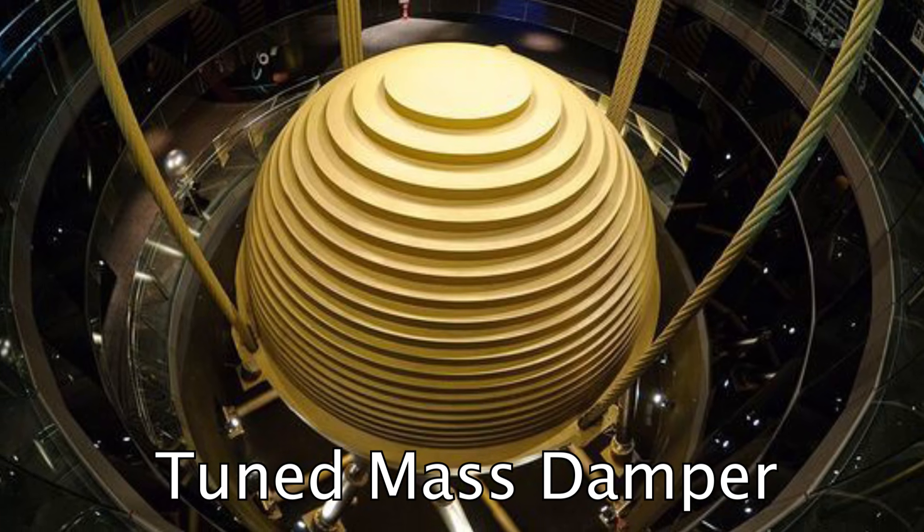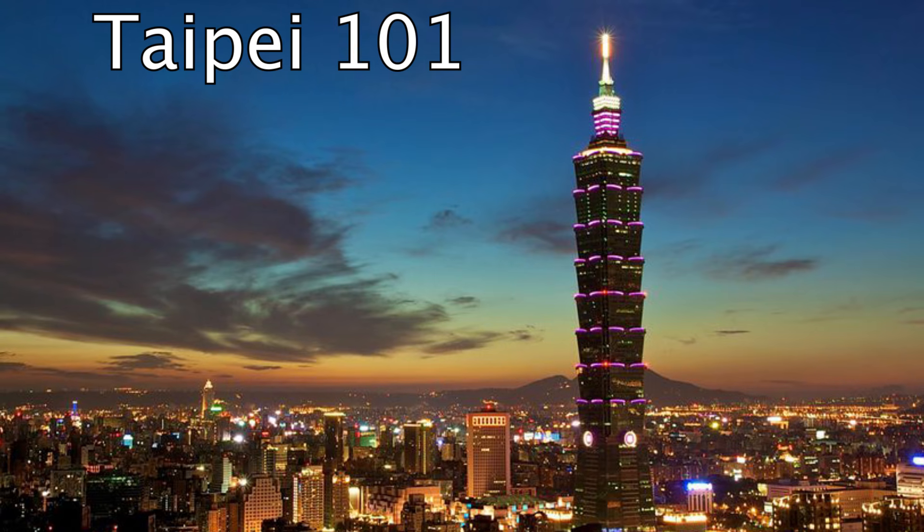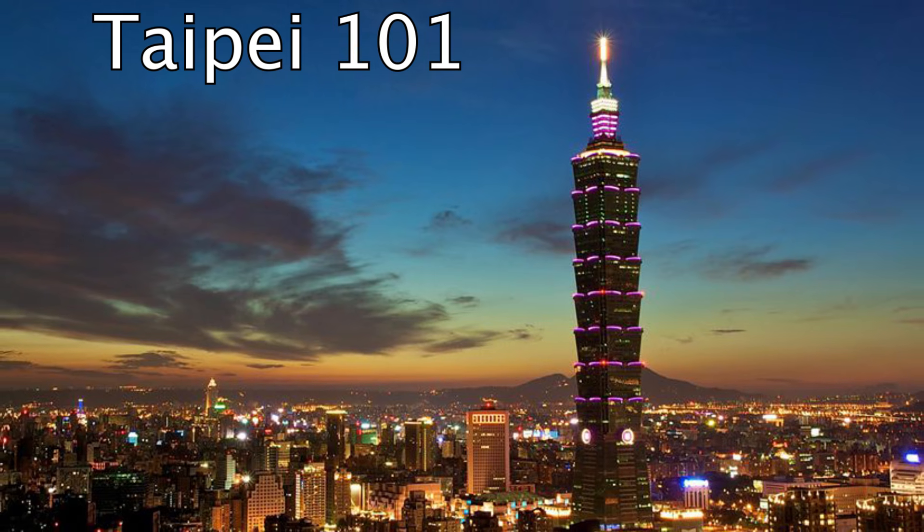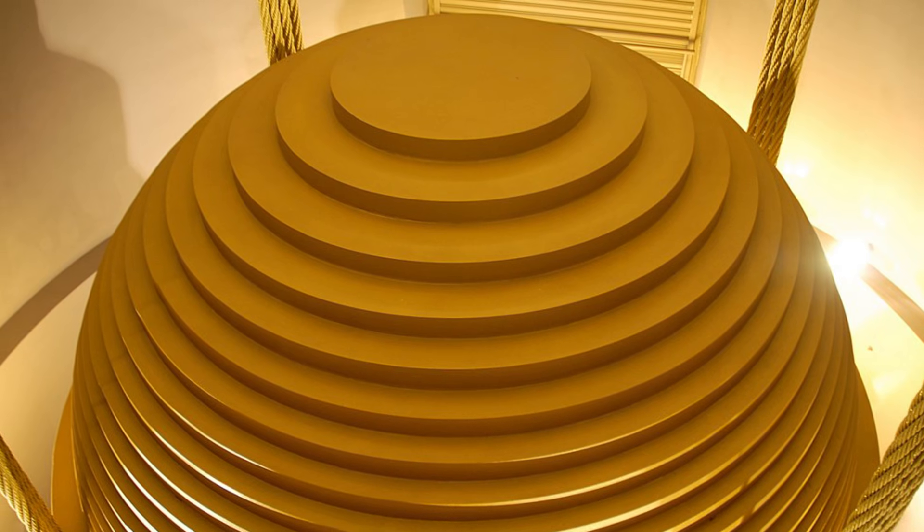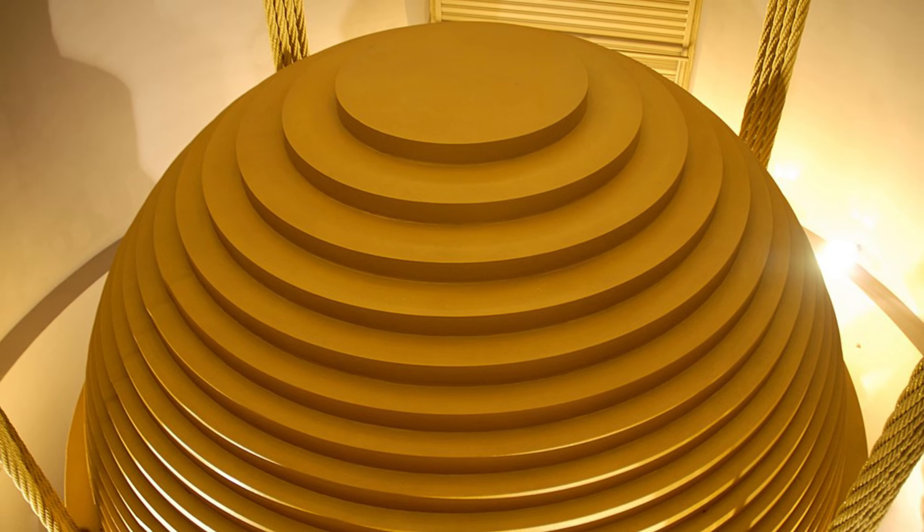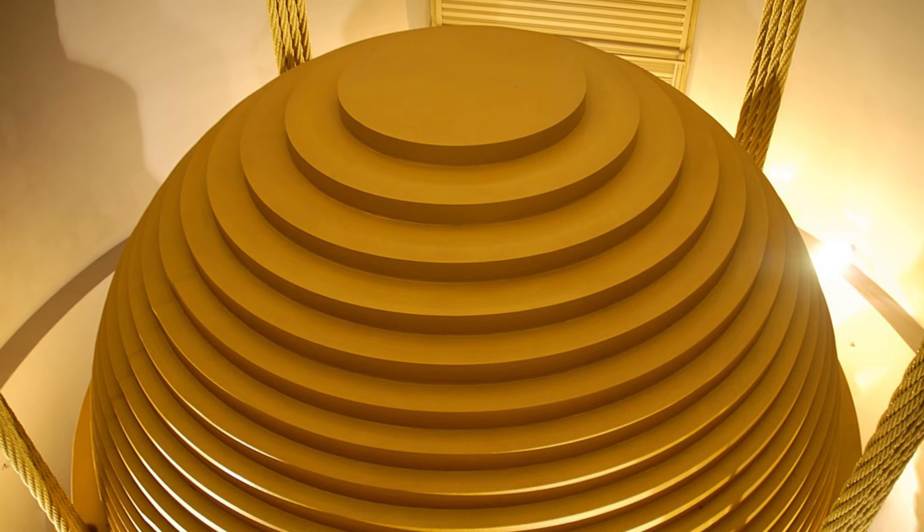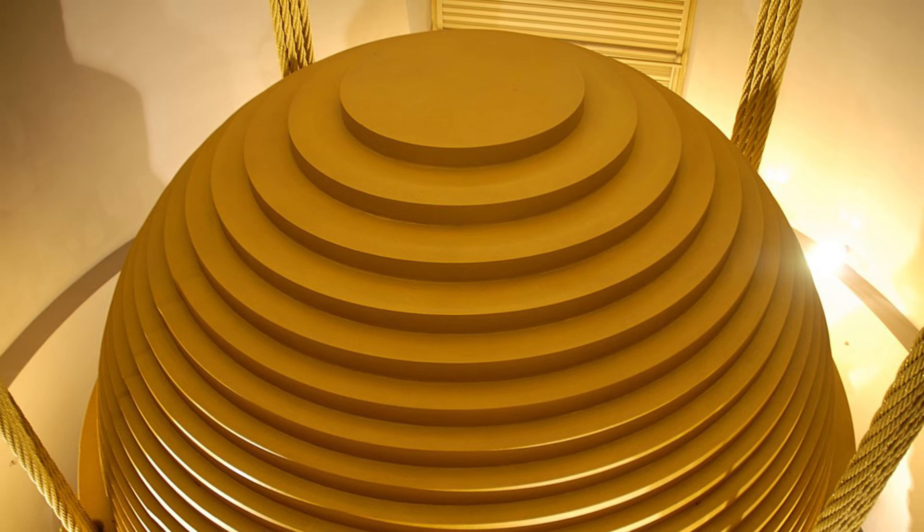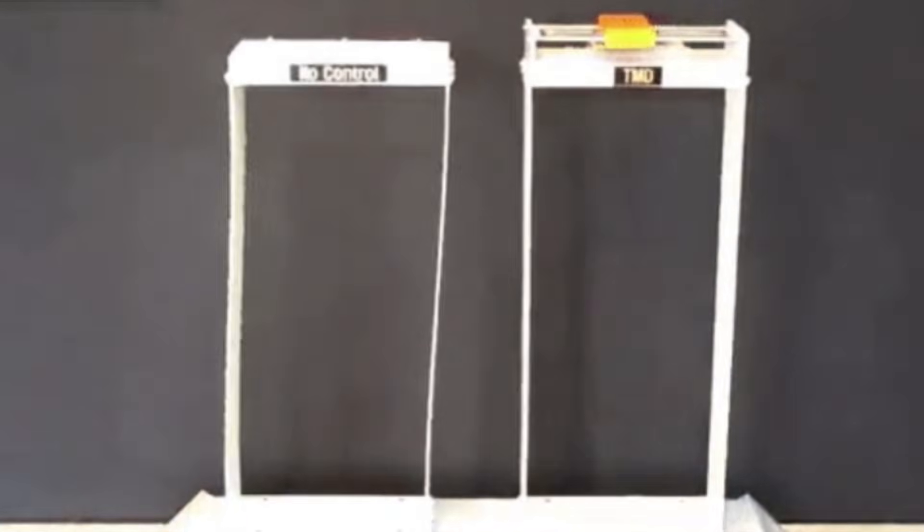This is a picture of one in the Taipei 101, located in Taiwan. This thing weighs 660 tons, which is about 20 fully loaded 18-wheeler trucks, or about 8,000 of me. So yeah, it's really heavy, but significantly reduces the chance of collapse due to strong wind or an earthquake, as you can see here.